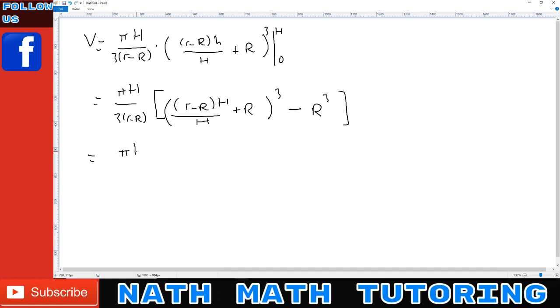That's πH over 3 times (r - R + R)³ - R³, so I end up with r³ - R³ in the brackets. I'm not done because I can actually factorize this as a difference of two cubes.